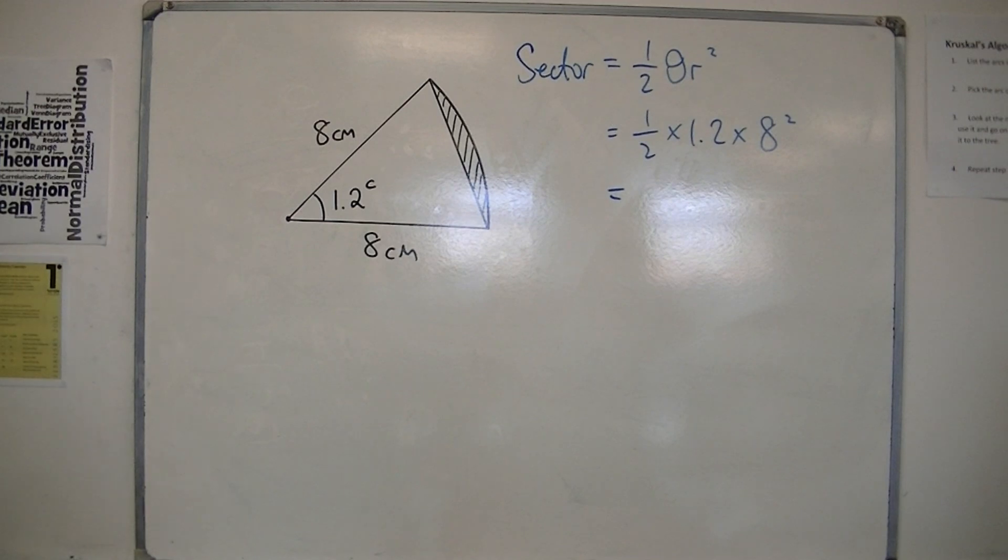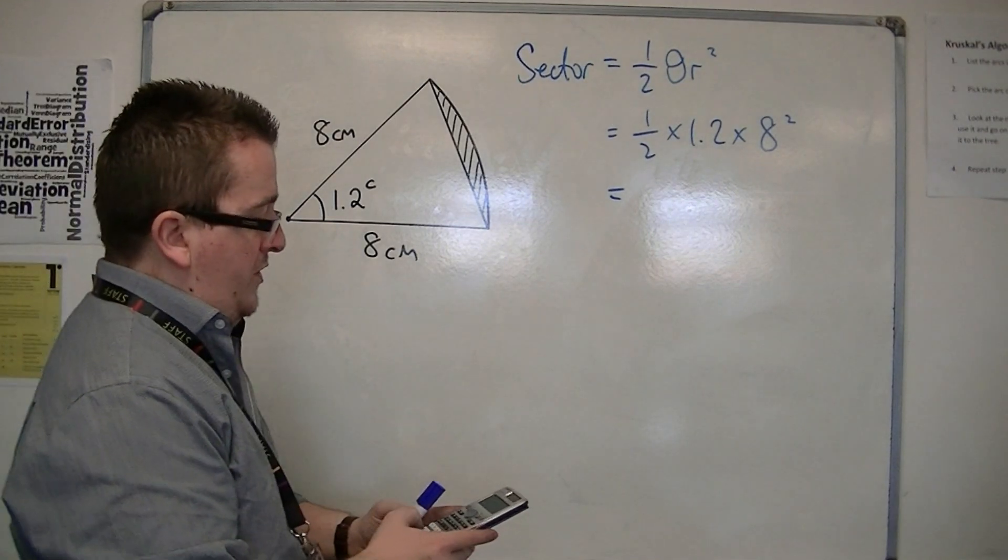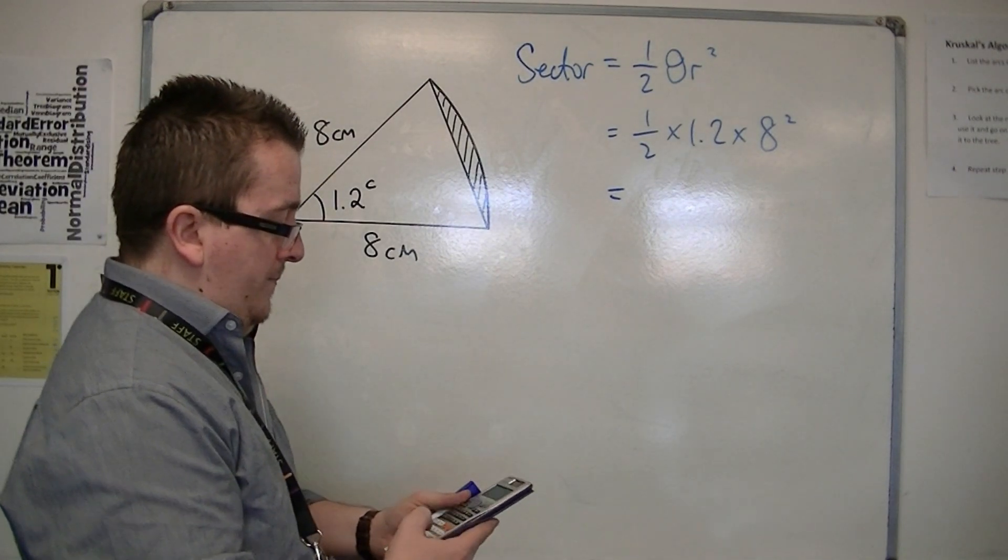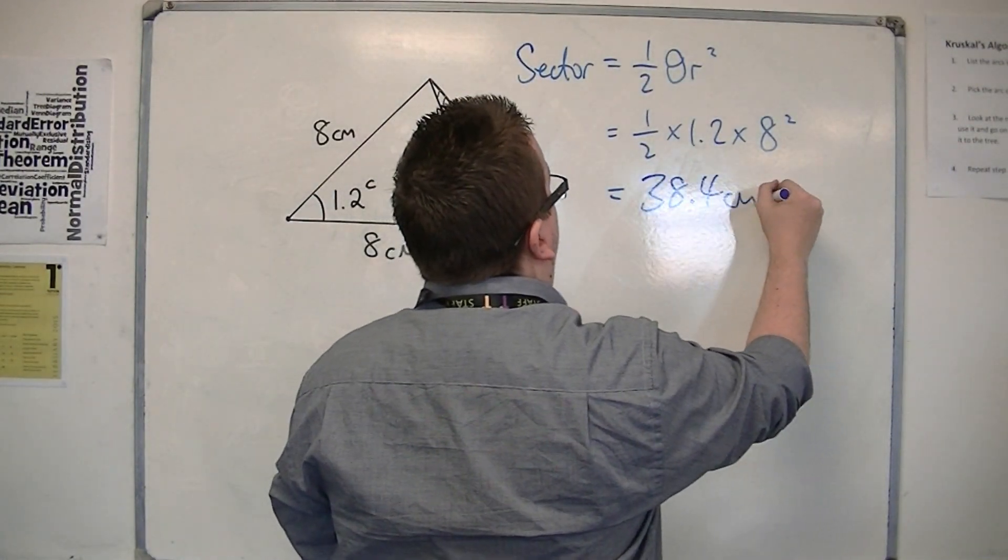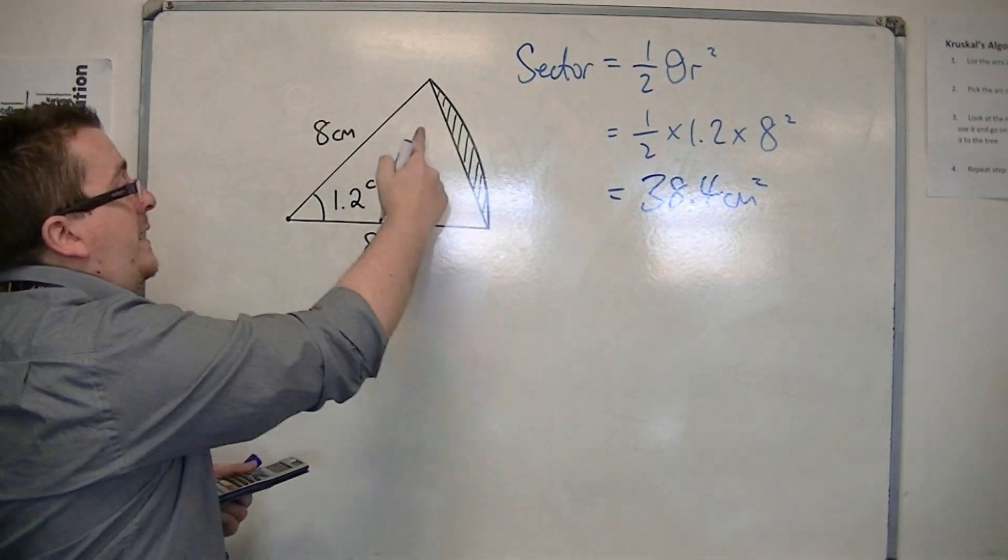So that's 0.5 times 1.2 times 8 squared. So that's 38.4 centimeters squared. That's the area of the whole sector.